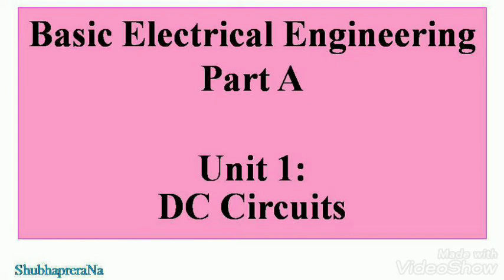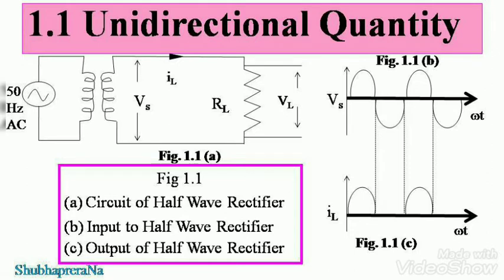Good day students. Today's lesson is from basic electrical engineering, part A, first unit: DC circuits. You need a directional quantity. Just have a look at the figure here — it's figure 1.1. There are three parts of figure 1.1: A, B, and C. A is the circuit of the half-wave rectifier, B is the input given to the half-wave rectifier, and C is the output. Note down the circuit because you will need it for the upcoming definitions and explanations of the unidirectional quantity.